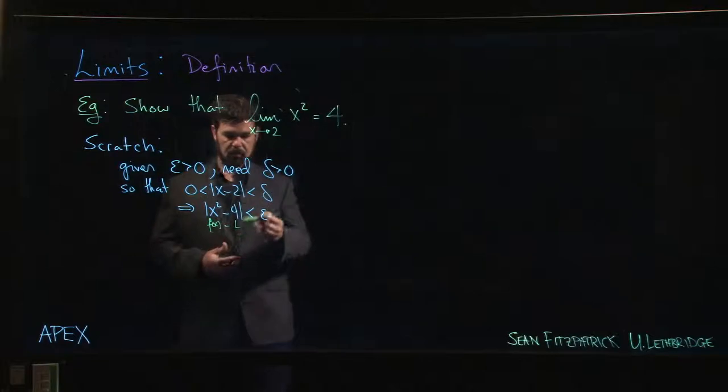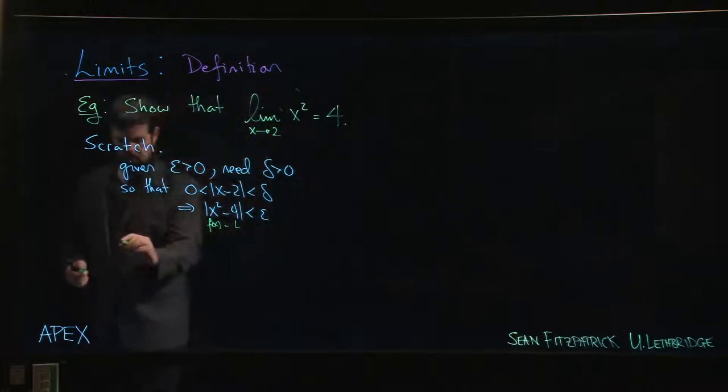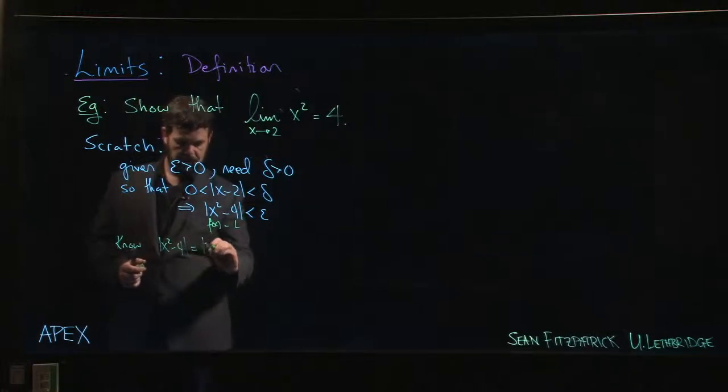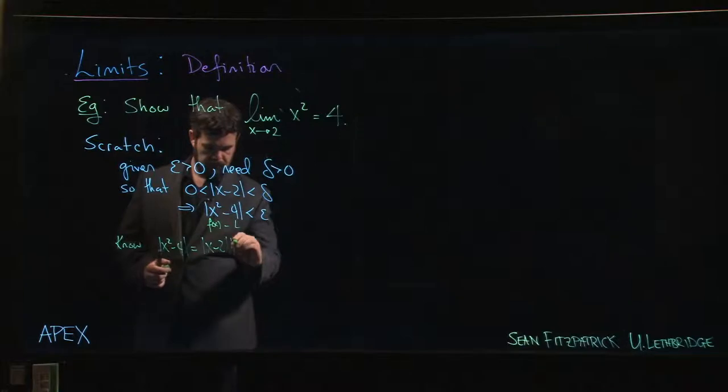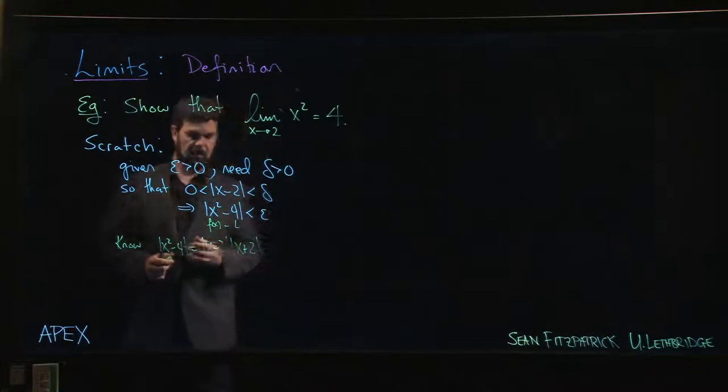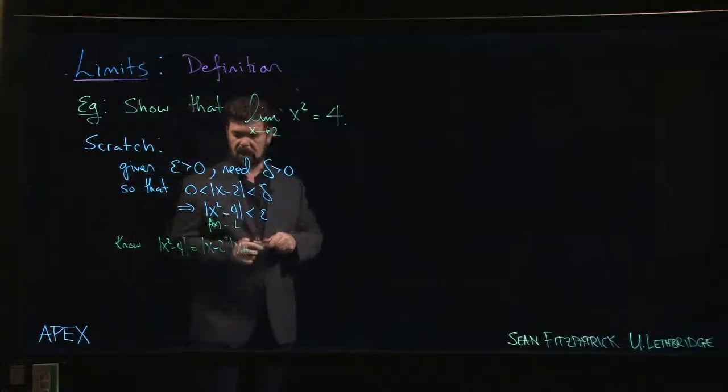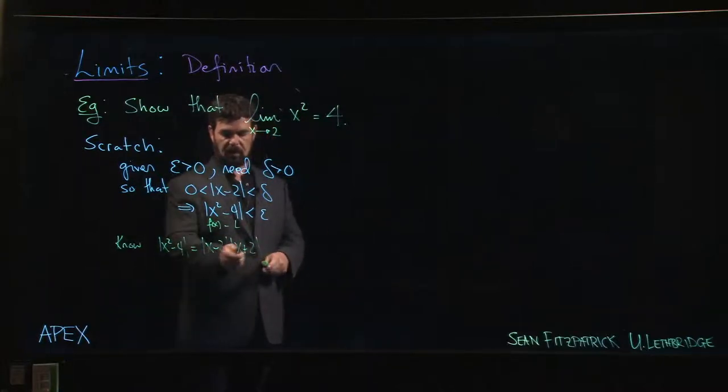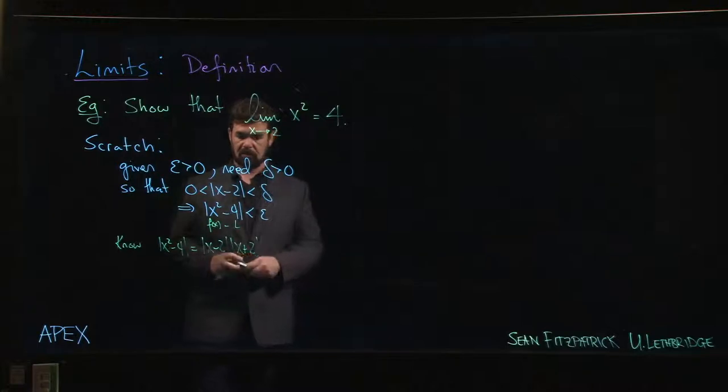And of course we can because we know that we can take x² - 4 and we can factor that as a difference of squares. So we can write this as (x - 2)(x + 2). Remembering that if you have the absolute value of a product, you can write that as the product of the absolute value. So I can write that as a product of two absolute values.